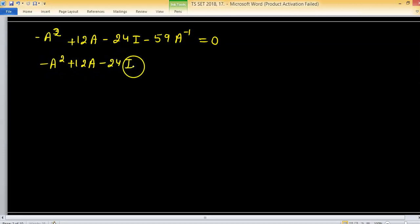Now, on further simplifying, we have minus A square plus 12A minus 24I minus 59 times A inverse. Because matrix inverse exists, you can multiply by A inverse on both sides. Now we have minus A square plus 12A minus 24I equals 59 times A inverse.